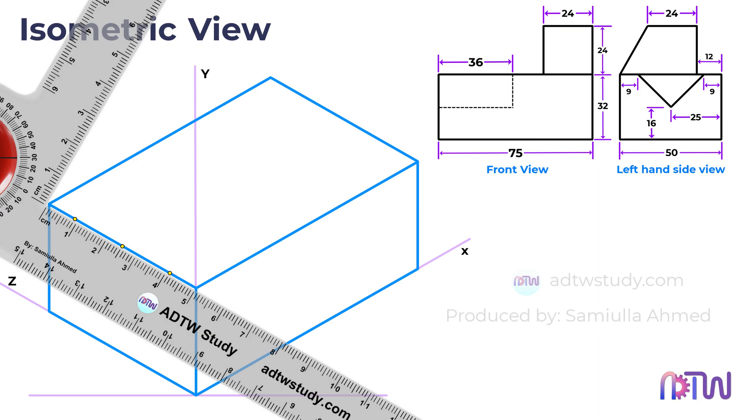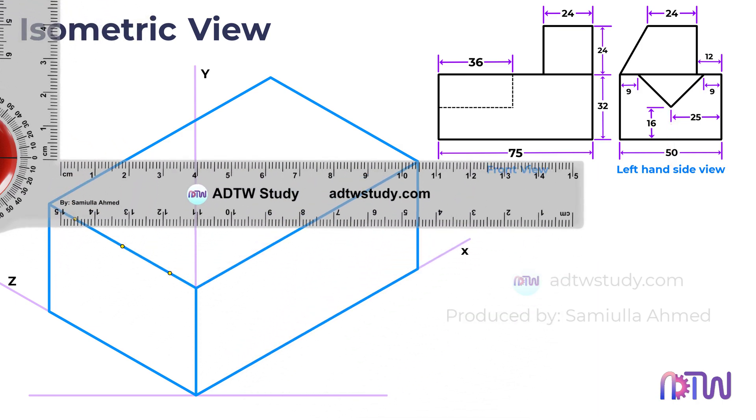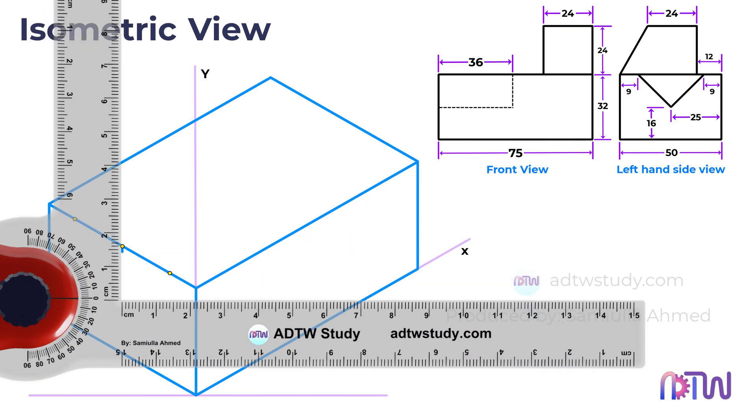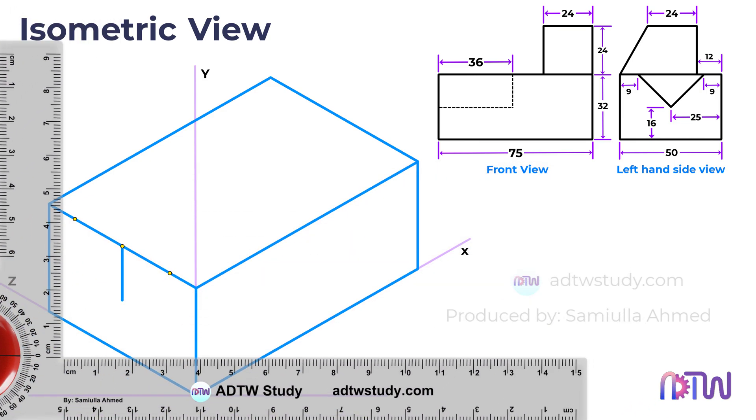Next, to pinpoint the third crucial point, draw a vertical line that spans 16mm downward from the center point you established earlier. The end point of this line will serve as the third point.